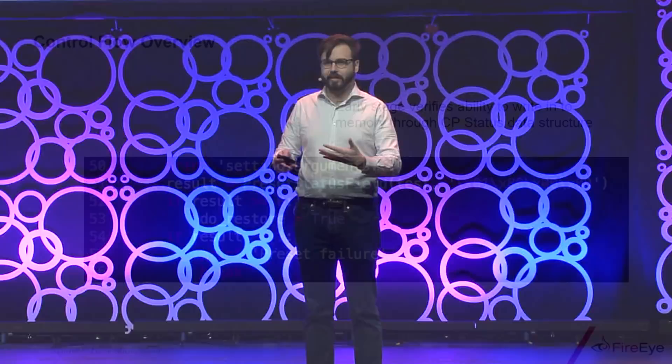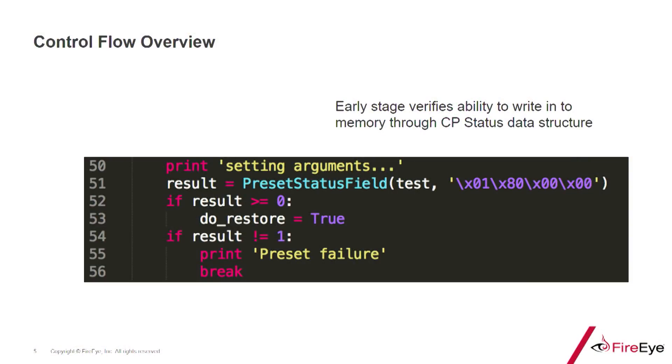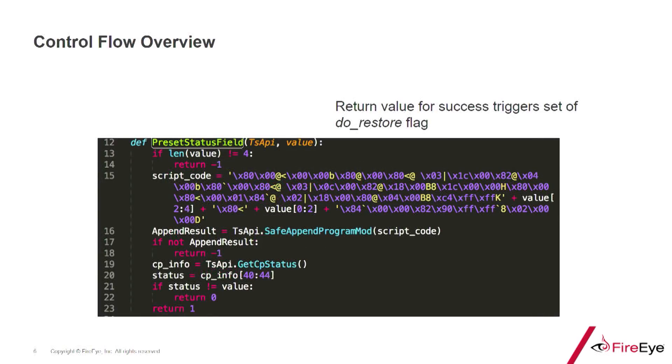At a very early stage, one of the first few lines of the attack script — this is decompiled Python bytecode from Trilog.exe — the malware runs a method called preset_status to set four attacker-controlled bytes in a region of memory corresponding to the CP status data structure. This was likely used as an echo test to verify their ability to read and write memory before delivering the imain.bin memory backdoor. The method inserts shellcode to write those bytes into memory, then attempts to read them back using legitimate TriStation protocol commands to view controller status.